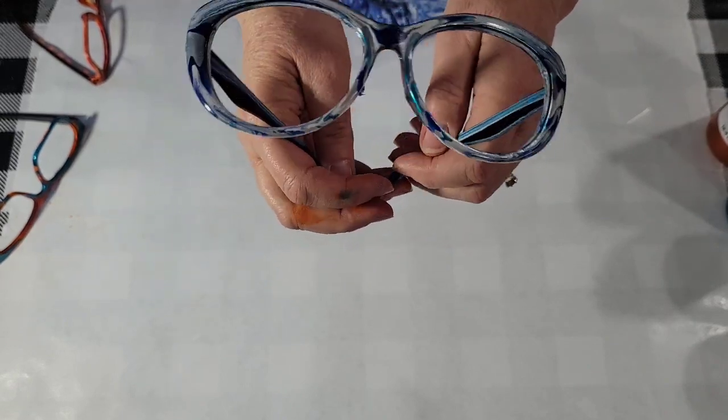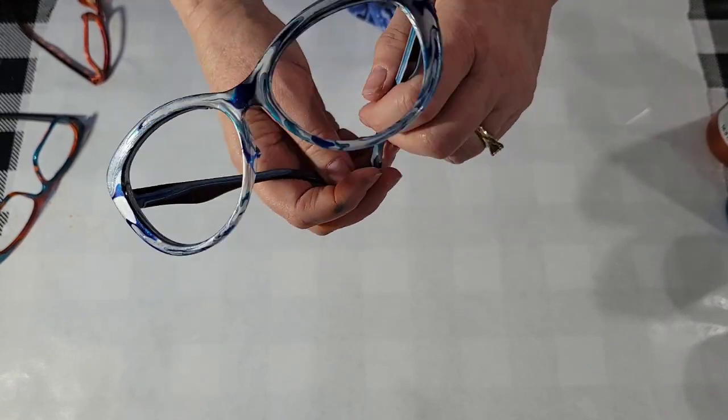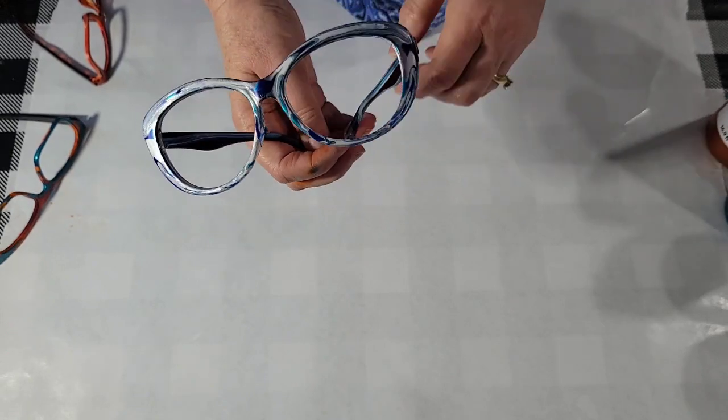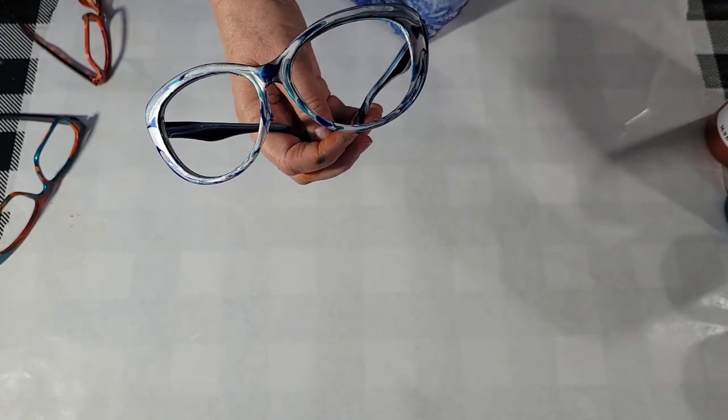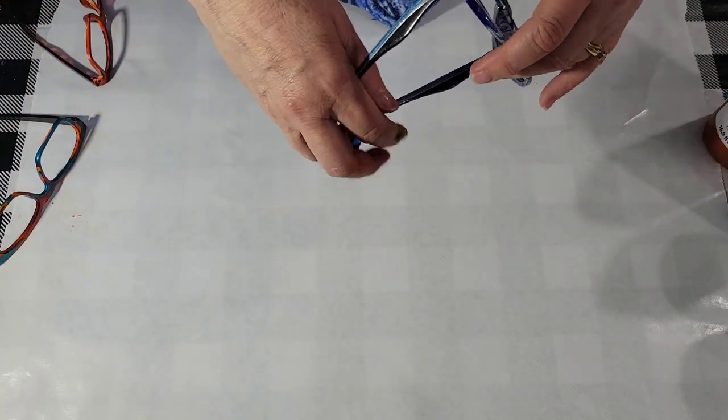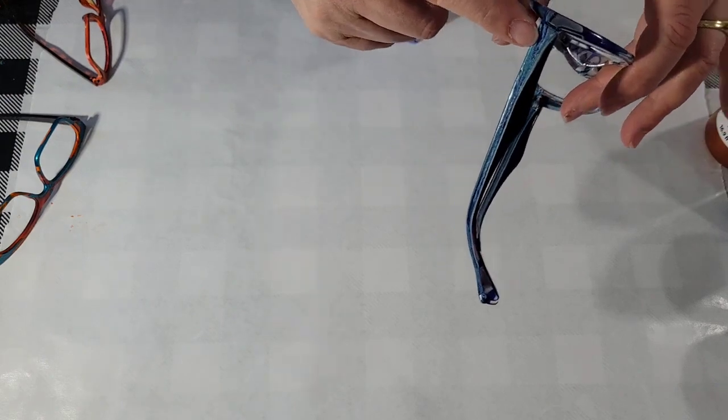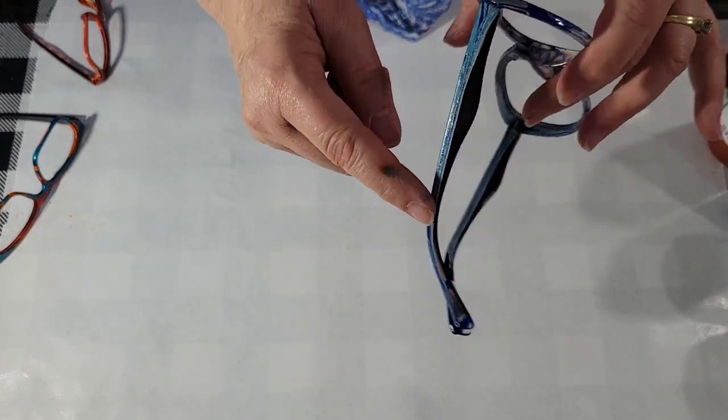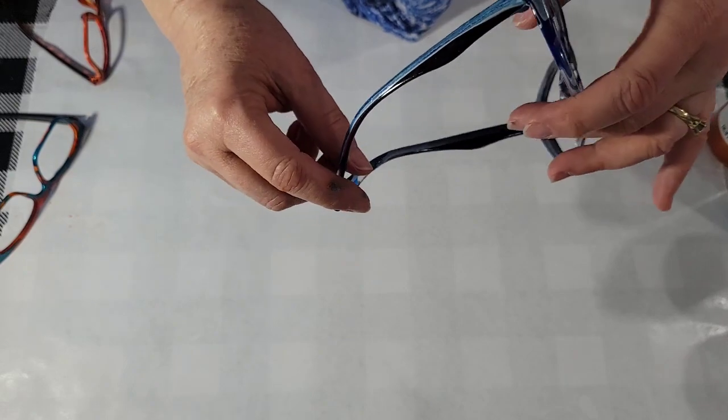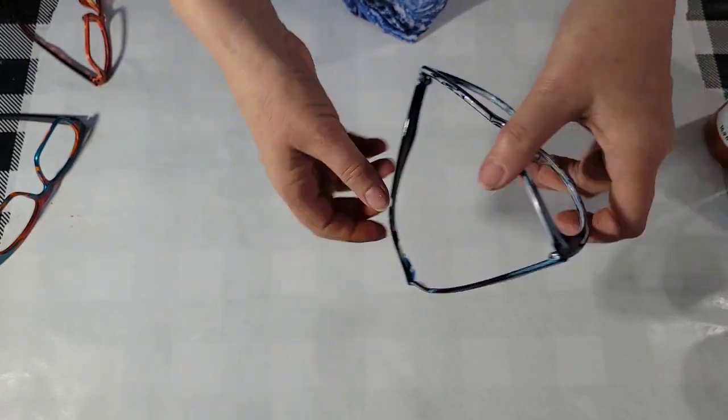And these were done all with Artist Loft ready to pour paints. Silver, this cobalt, bright blue, and white. And I didn't worry about the arms. But they did happen to drip down the arms. And it looks kind of neat. I don't mind that. These were sunglasses.